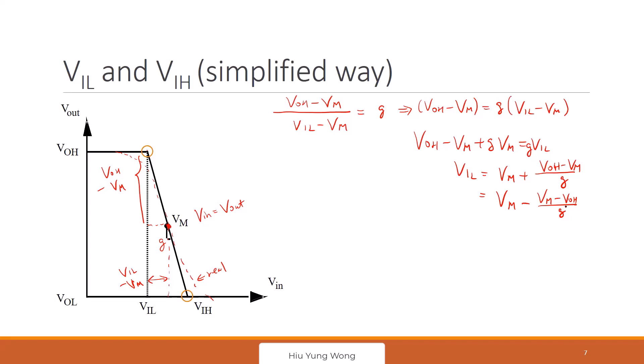Now then, how do I find VIH? Can someone give me an idea? It just used a similar concept. We can work on this triangle. This slope is also G, right?